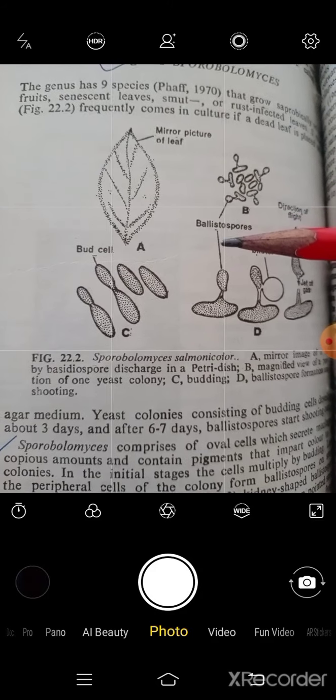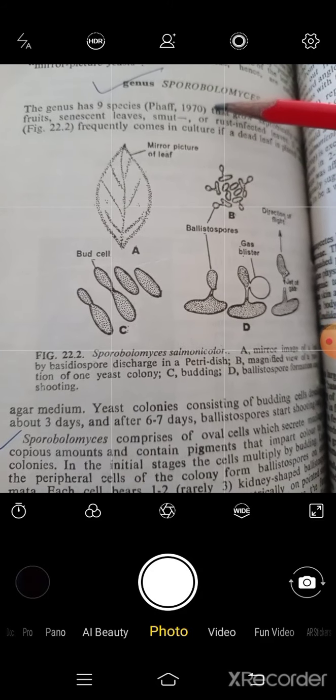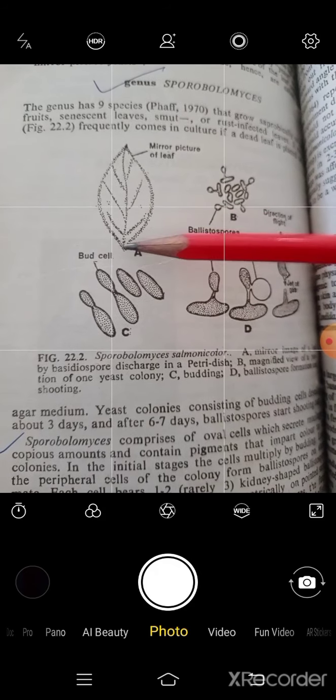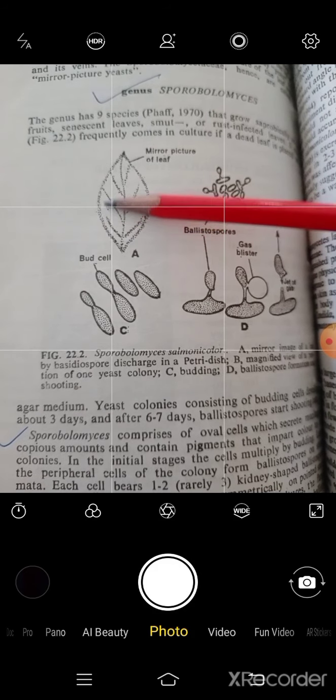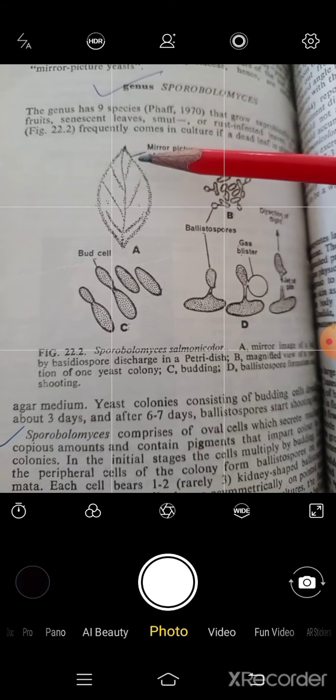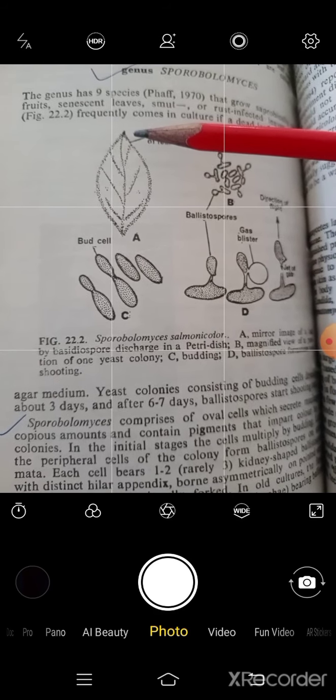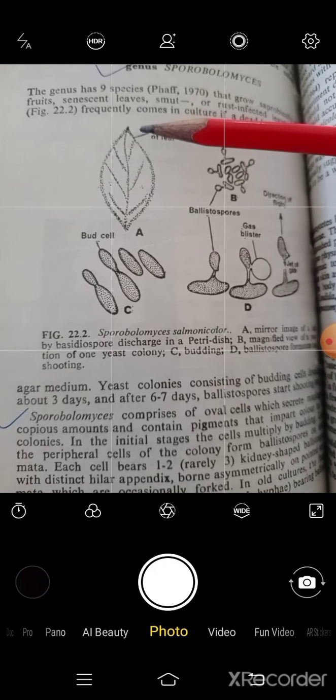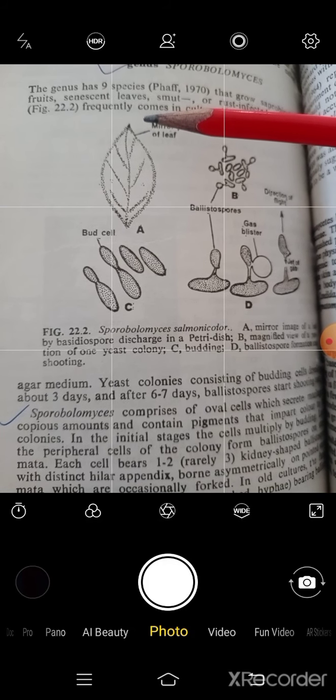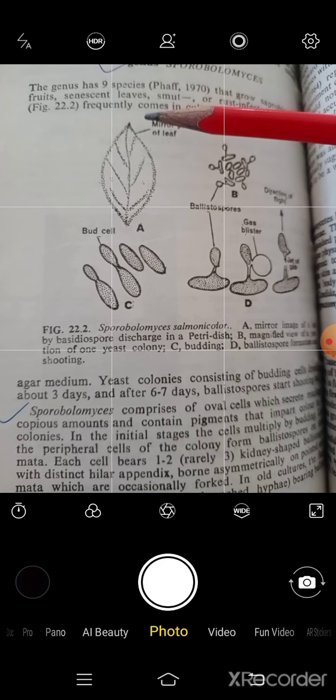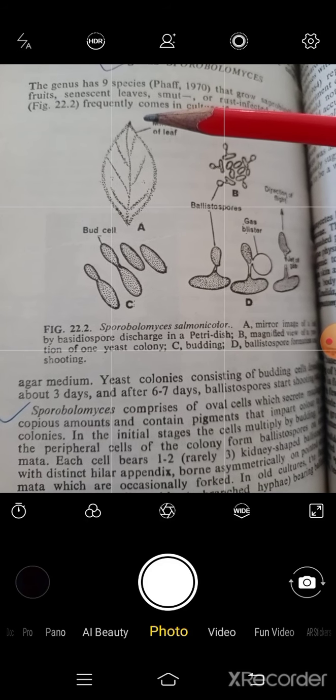Any leaf infected with sporobolomyces, if you take that leaf and put it on the agar medium petri dish, in the agar medium solidify, if you keep leaf in the agar medium, and after one to two days,